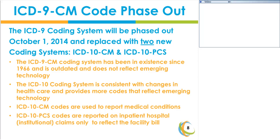The decision was made to update to the ICD-10 coding system, which reflects the changes in technology and the constantly evolving Medicaid and Medicare services. The two code sets are different and distinct: the ICD-10-CM will continue to be used to report medical conditions, while the ICD-10-PCS is only used for inpatient hospital claims and reflects the facility bill.